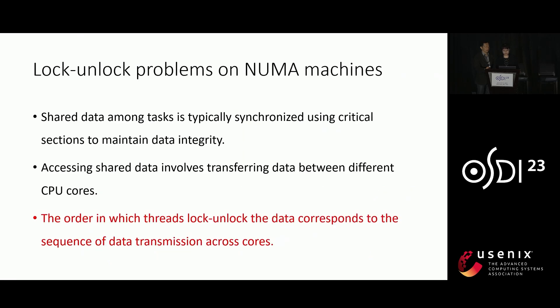Let's start by discussing the background and motivations behind our research, focusing on the lock-on-lock problems on NUMA machines. In modern computing systems, shared data among tasks is typically synchronized using critical sections to maintain data integrity. However, accessing shared data involves transferring data between different CPU cores, and the order in which tasks access the data corresponds to the sequence of data transmission across cores.